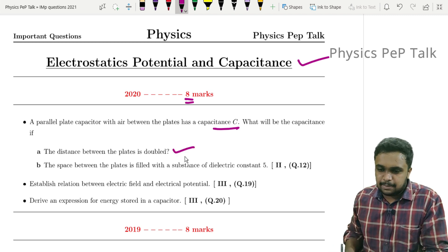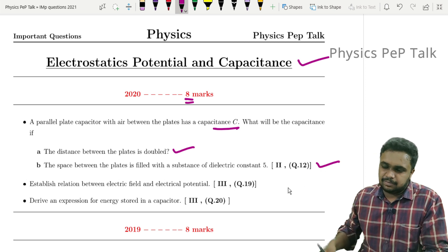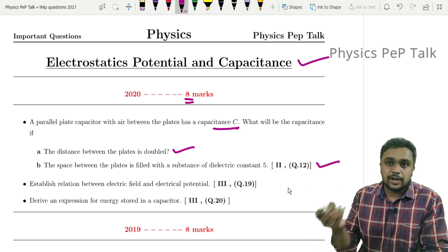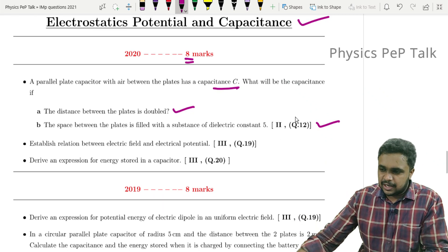And the space between the plates is filled with a substance of dielectric material of some constant phi. So capacitance, parallel plate capacitor - one question on this. Establish relation between electric field and potential.